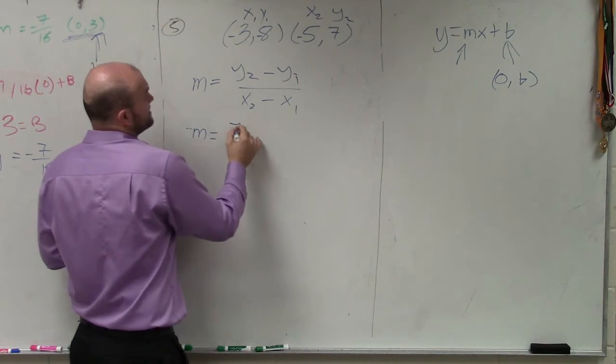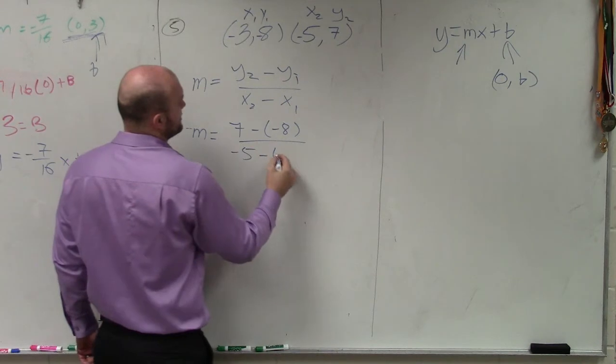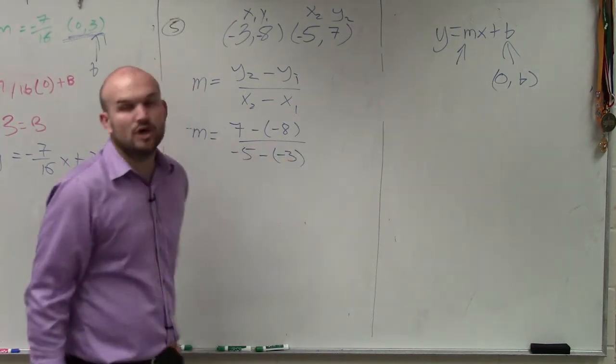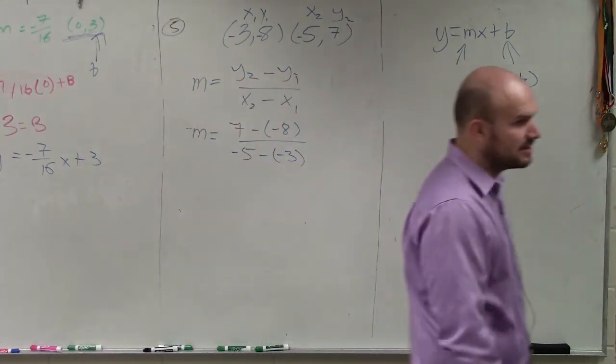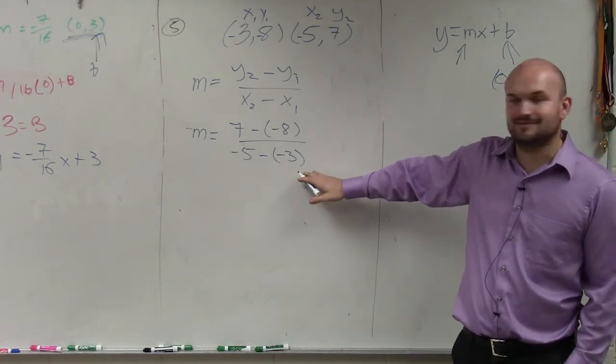So by using the formula y2 minus y1 over x2 minus x1, my slope is going to be 7 minus a negative 8 divided by negative 5 minus a negative 3. Please note my use of parentheses. Note it. Thank you, Blake.